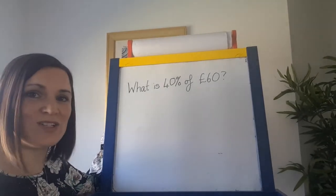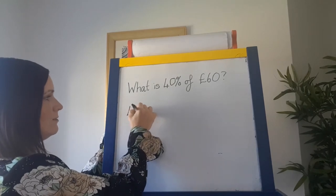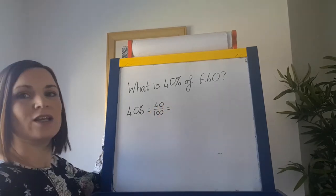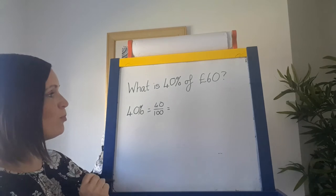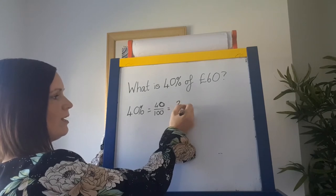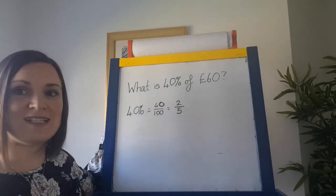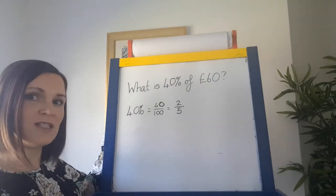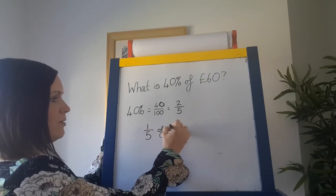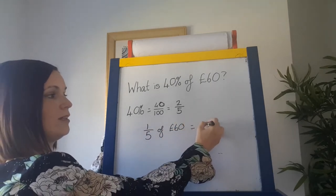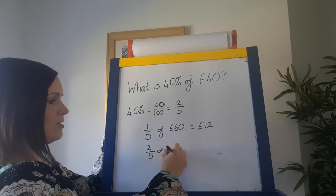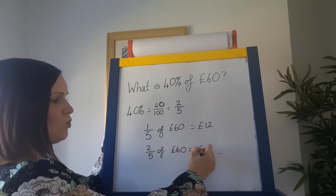Another example where it's not a unit fraction: 40% is 40 over 100. To simplify that, you can divide top and bottom by 20 — 40 divided by 20 is 2, and 100 divided by 20 is 5 — so 40% is the same as 2 fifths. Find the unit fraction first: one fifth of £60 equals £12. Then for 2 fifths, multiply that answer by 2. So 2 fifths of £60 equals £24.